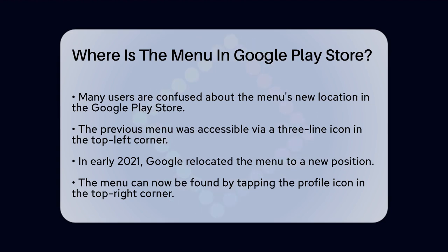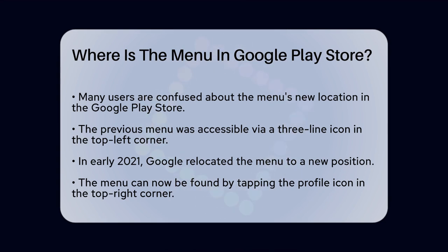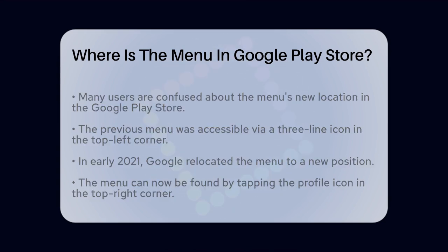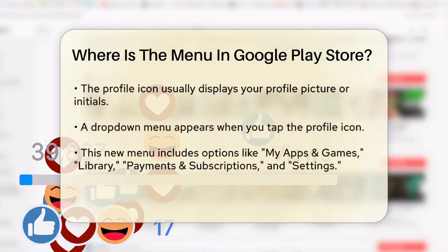In the past, the menu was easily accessible through a three-line icon, often called the hamburger menu, located in the top left corner of the Play Store app. However, Google made a significant change in early 2021 that moved this menu to a different spot.